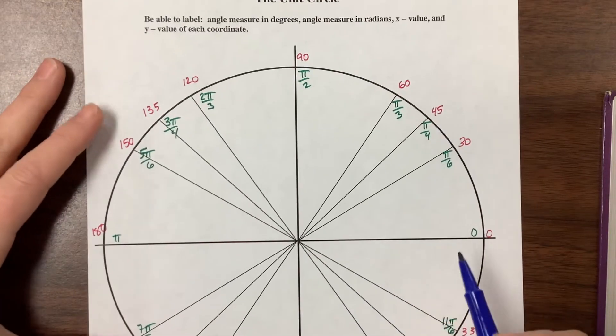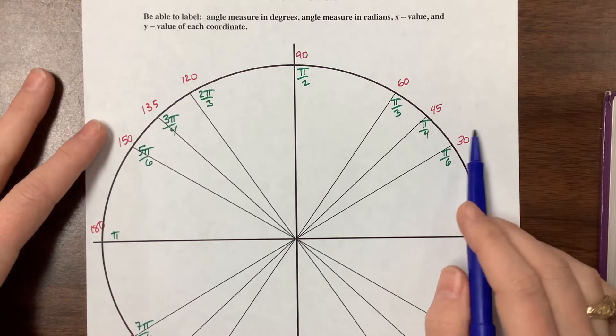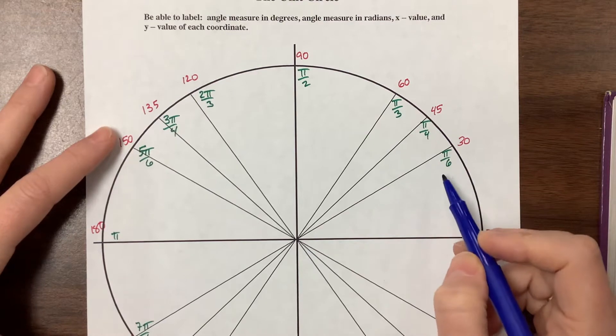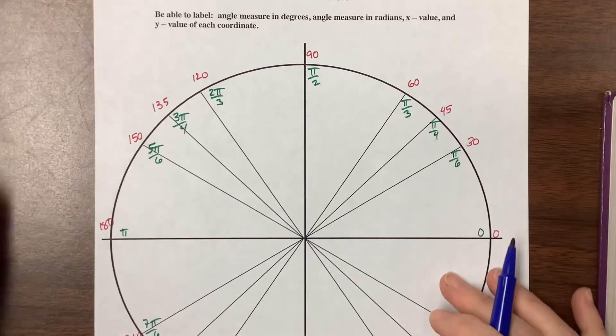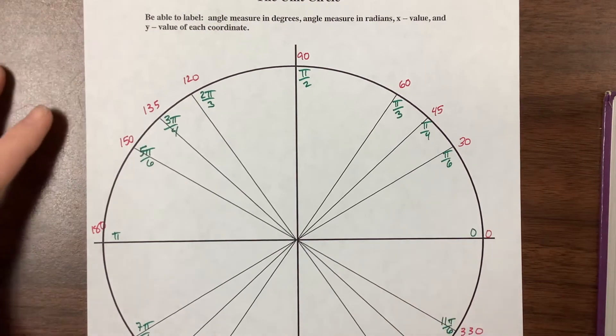You don't have to write the degree symbol even though you probably should, because technically if it doesn't have a label it's implied to be radians. But in this case it's kind of obvious and it just slows us down because we're going to do a race, and if you can beat me then you get bonus.